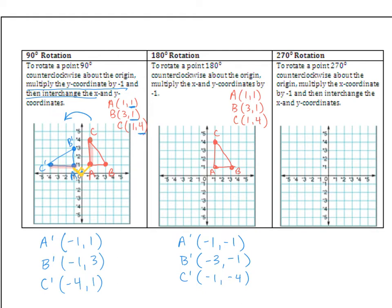Graph your new points: A prime at (negative 1, negative 1), B prime at (negative 3, negative 1), C prime at (negative 1, negative 4) — connect them. Side AC was vertical; after a 180-degree rotation it's still vertical, but now it's upside down with A on top. We've gone counterclockwise. To check: connect A and A prime to the origin — yes, that looks like a 180-degree rotation.